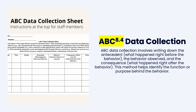ABC data collection sheets: we write down what happened before the behavior, we write down the behavior — you should have a pretty good idea of what behaviors you're looking at. Occasionally we walk in with no idea and write down all behaviors. But most of the time we know the specific behavior we're going to work on, so we're waiting to see that behavior and writing it into the sheet. Then we write the consequence — what happened right after — and this helps us identify the function of the behavior.